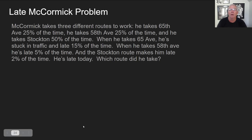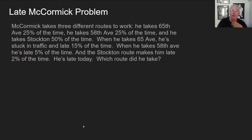Here's a more complicated one — one with three initial possibilities. McCormick takes three different routes to work. He takes 65th Avenue 25% of the time, 58th Avenue 25% of the time, and Stockton 50% of the time. When he takes 65th Avenue, he's stuck in traffic and late 15% of the time. When he takes 58th Avenue, he's late 5% of the time. The Stockton route makes him late 2% of the time. He's late today. Which route did he take?